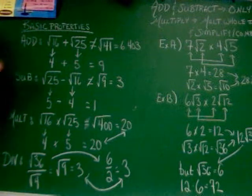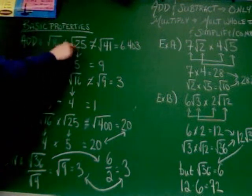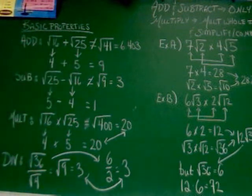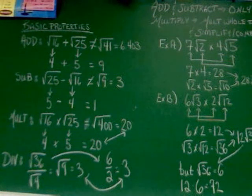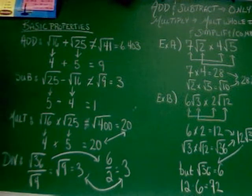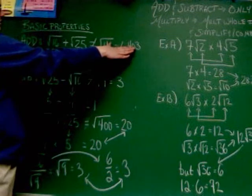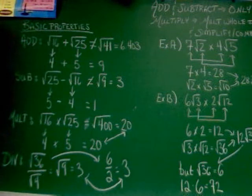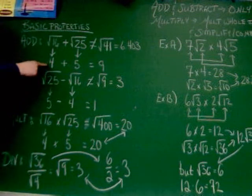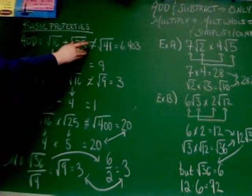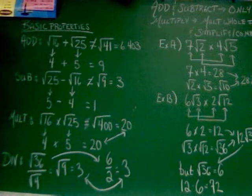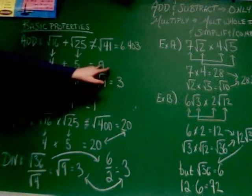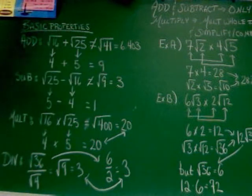Start with adding. The square root of 16 plus the square root of 25. You can't just add 16 and 25 to get 41 and then take the square root of 41 — that's an incorrect answer. You have to work in parts. The square root of 16 is 4, then the square root of 25 is 5, and then you add those two together to come up with 9. That's the correct answer.